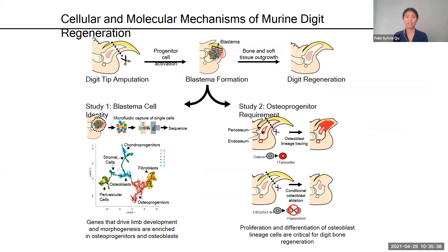Injuries or diseases that lead to limb loss pose important challenges to the medical community. Almost 200,000 Americans undergo amputations annually, and so do many of our pets. This speaks to the fact that the regeneration of musculoskeletal tissues is limited, such that healing often culminates in scarring.